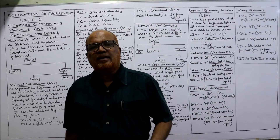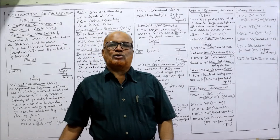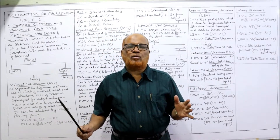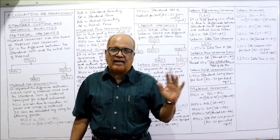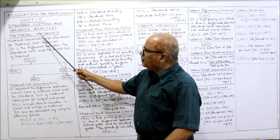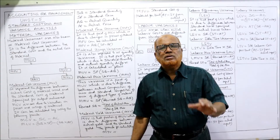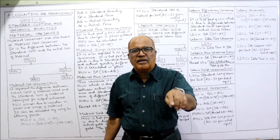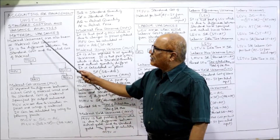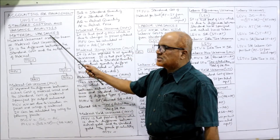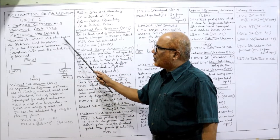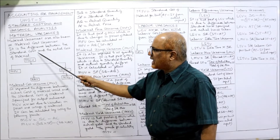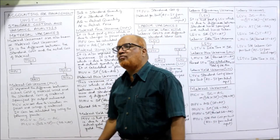Variances are calculated for every element of cost, but in our syllabus only two variances we are going to study: material variances and labor variances. First, material variances — because the largest element of cost is material cost. Material variances are also known as material cost variances. It is the difference between the standard cost and the actual cost of material.